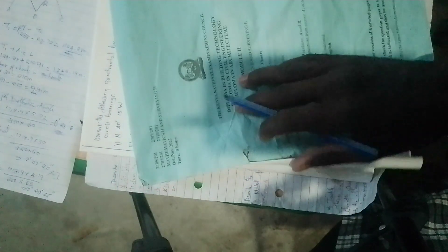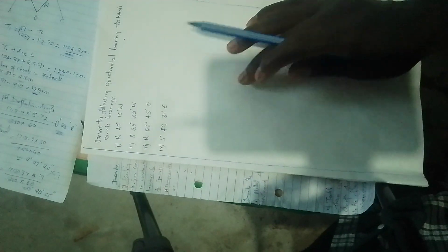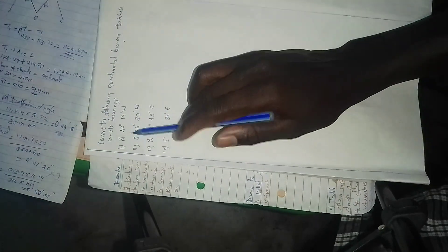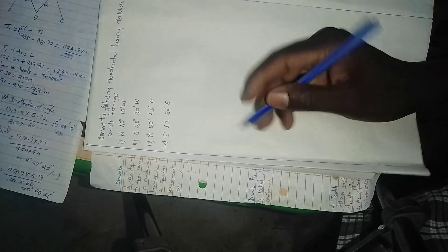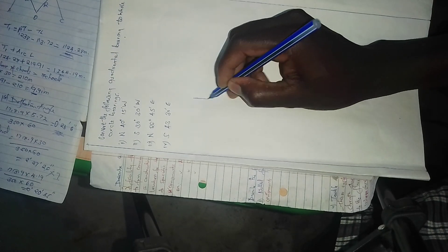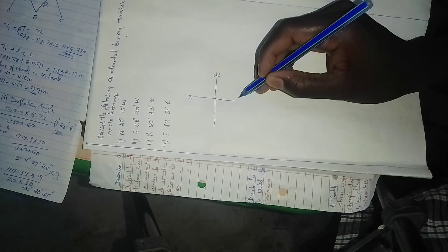The question was number 8a: convert the following quadrantal bearing to whole circle bearing. I'm going to read the question. Convert this reduced bearing to whole circle bearing. We're going to draw this one: north, east, south, west.